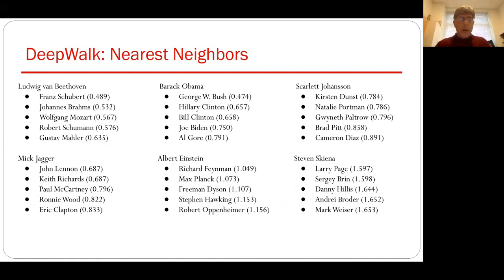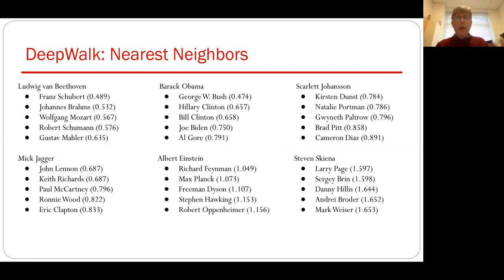When you take the embedding, project it down to two dimensions, and color by what language people speak, it's amazing how well this reconstructs the language structure in Belgium — just based on the connectivity patterns. If you do a DeepWalk of Wikipedia, building embeddings on all the people in Wikipedia, the nearest neighbor for Beethoven is going to be composers, the nearest neighbors for Mick Jagger will all be rock stars, and Albert Einstein will have physicists as neighbors.